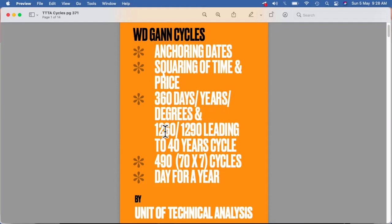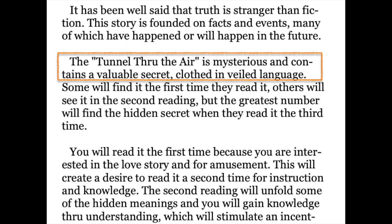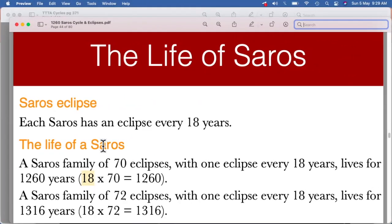And probably that is how it has been related to the 360 days, years, degrees, and 1260 years. Now see, Gann was a very clever man. He already told us that he has written Tunnel Through the Air in a veiled language and we need to get into the details.